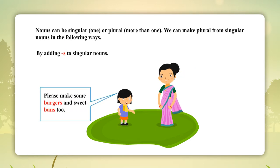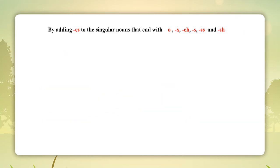Reema: 'Please make some burgers and sweet buns too.' By adding 'es' to singular nouns that end with o, x, ch, s, double s, and sh.